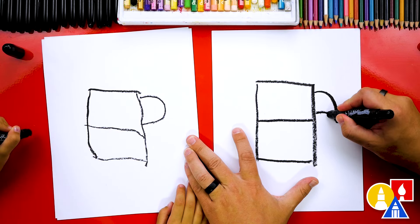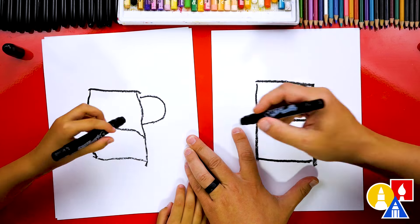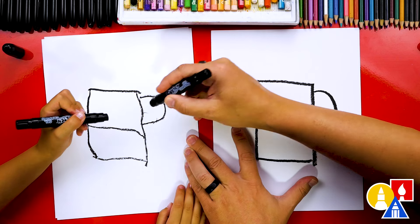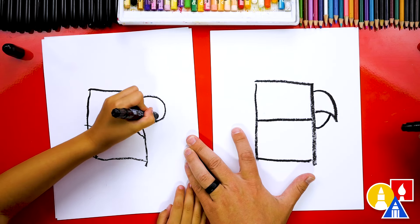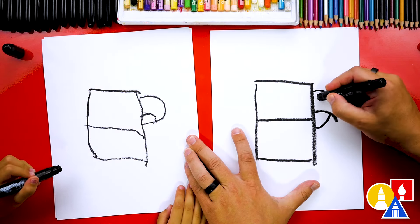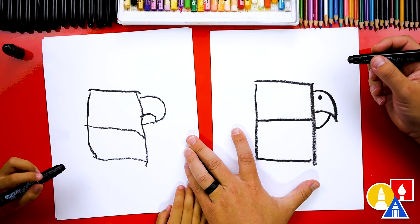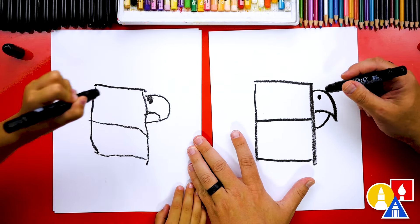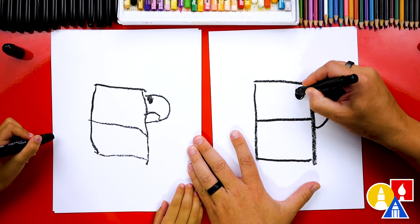And then we're going to draw the bottom of the beak. Oh, you know what you could do? You could draw a curve that starts here and comes up into there. There you go. And let's also draw a little circle for the nostril. And let's also draw a circle for the eye.